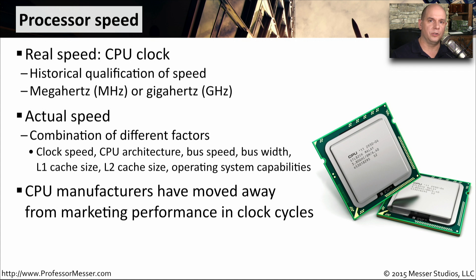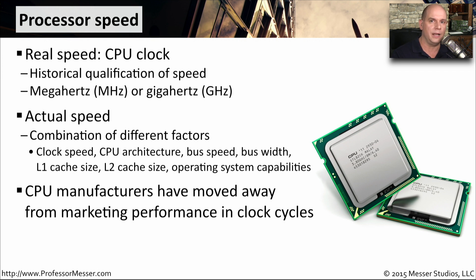Early on, when personal computers were just hitting the market, manufacturers were using the CPU speed to try to tell people what systems were better or worse than others. But these days, we tend to look at the capabilities of an overall system. We don't tend to see marketing based on total CPU speed any longer. It might focus on a particular category or manufacturer of CPU, but the emphasis is not solely on that particular clock speed.